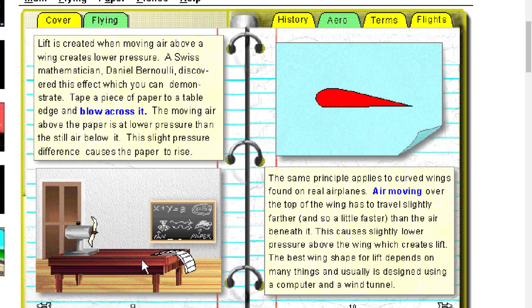If you tape a piece of paper to a table edge and blow across it, the moving air is at a lower pressure than the air below it. This slight pressure difference causes the paper to rise.